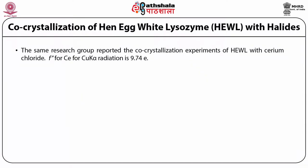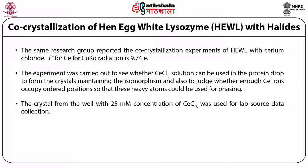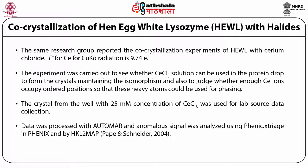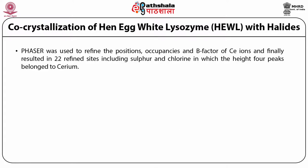Our group also reported co-crystallization experiments of hen egg white lysozyme with cerium chloride; F double prime for cerium at copper K-alpha is large at 9.74 electrons. The experiment was carried out to see whether cerium chloride solution can be used in the protein drop to form crystals maintaining isomorphism, and to judge whether enough cerium ions occupy ordered positions for use in phasing. The crystal from the well with 25 millimolar concentration of cerium chloride was used for lab source data collection. Data was processed with AUTOMAR, anomalous signal was analyzed using the PHENIX exchange module, and AUTOSOL was used for substructure solution. SHELXD located the 2 cerium peaks, and PHASER was used to refine positions, occupancies, and B-factors of the cerium ions, resulting in 22 refined sites including sulfur and chlorine, with the four highest peaks belonging to cerium.